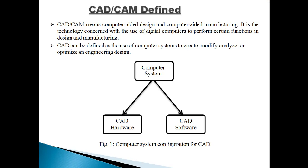It means use of computer to improve your design quality or manufacturing quality and improve productivity — that is called CAD/CAM. CAD is defined as a computer system used to create, modify, analyze, or optimize an engineering design. The computer system is mainly divided into two parts: the hardware part and the software part.